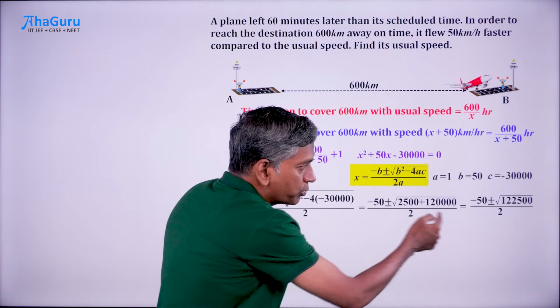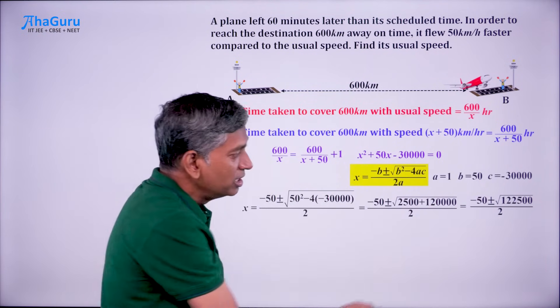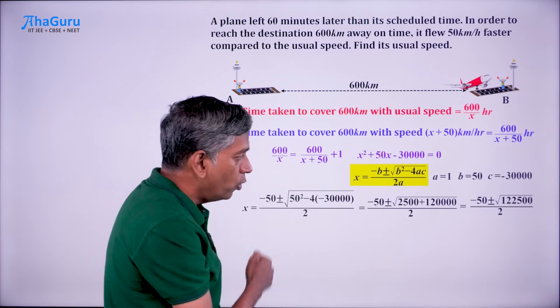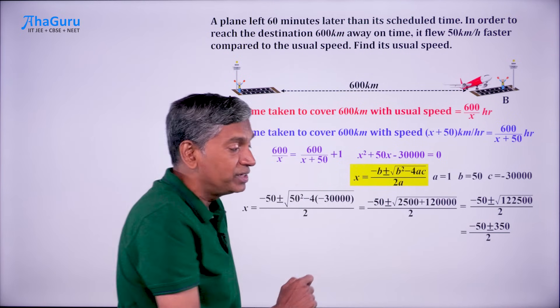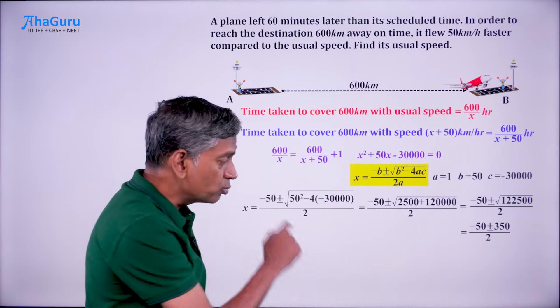This is easy to calculate. 1, 0 can be taken out. 1,225 square root is 35. Overall, you are going to get minus 50 plus or minus 350, the whole by 2. This is what is x.